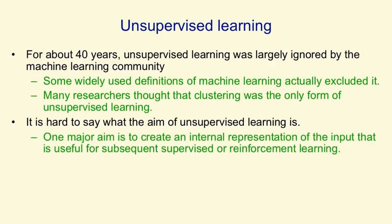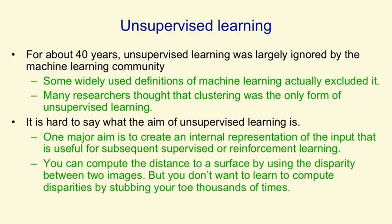The reason we might want to do unsupervised learning in a separate stage is we don't want to use, for example, the payoffs from reinforcement learning to set the parameters for our visual system. So you can compute the distance to a surface by using the disparity between the images you get in your two eyes, but you don't want to learn that computation by repeatedly stubbing your toe and adjusting parameters in your visual system every time. That would involve stubbing your toe a very large number of times. There are much better ways to learn to fuse two images based purely on the information in the inputs.